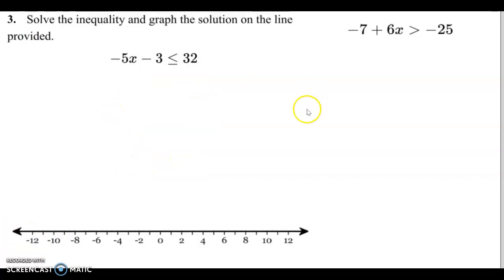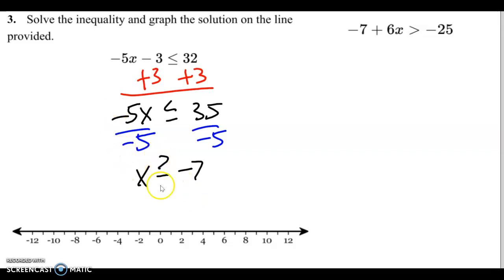Alright. Here, same thing. We're going to isolate the negative 5x. We're going to add 3 on both sides. Always do the opposite. 32 plus 3 will get us 35. Now we're going to divide by negative 5. And x is going to get us greater than or equal to negative 7. We divided by that negative, so we swap the inequality around.